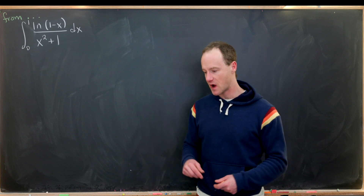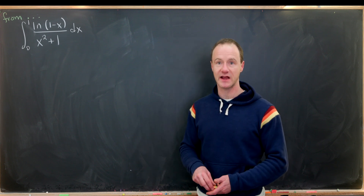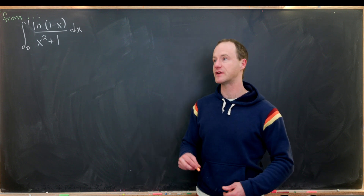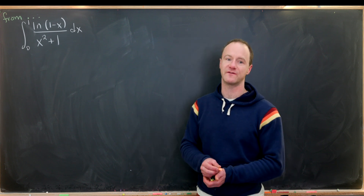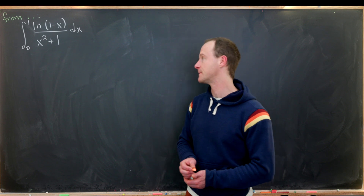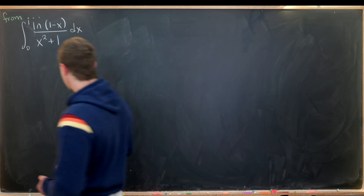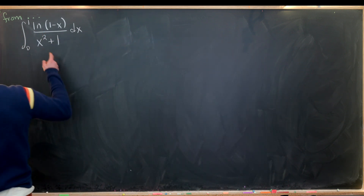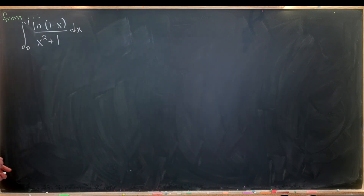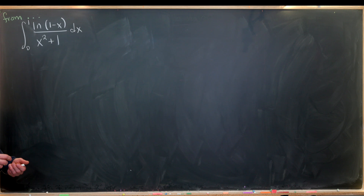Let me know in the comments if you can crack it using a double integral or with Feynman's trick. Since we've got an x squared plus 1, that gives a hint as to a tangent substitution.